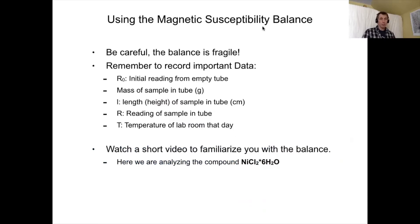Whenever we use the magnetic balance it's important to be careful. The balance is very fragile and costs about between five and seven thousand dollars so we want to be gentle with it. Make sure we record all of the data we need: the initial value of our empty tube, the mass of the sample in the tube, the height of the sample in the tube, the reading of the sample within the tube, and the temperature of the lab that day. Forgetting any of these means we can't actually continue with the calculations. I've put together a short video on Canvas that you can watch of how to collect the data.